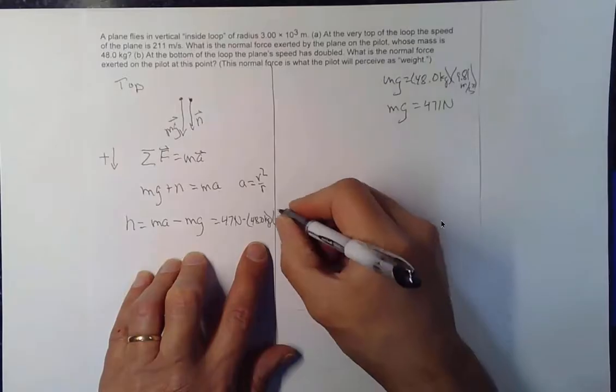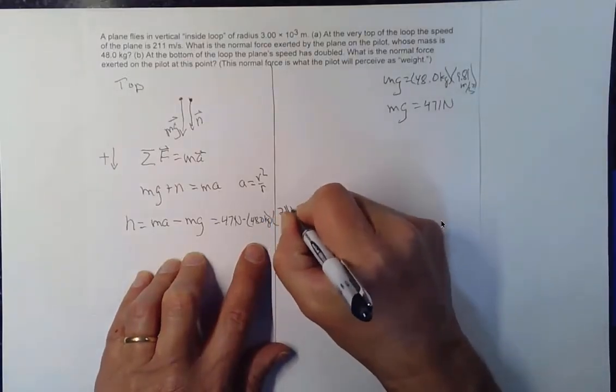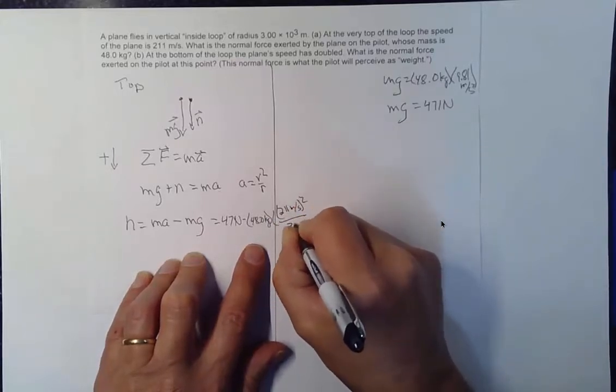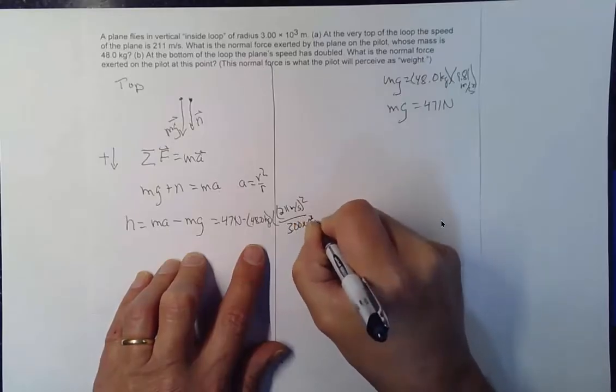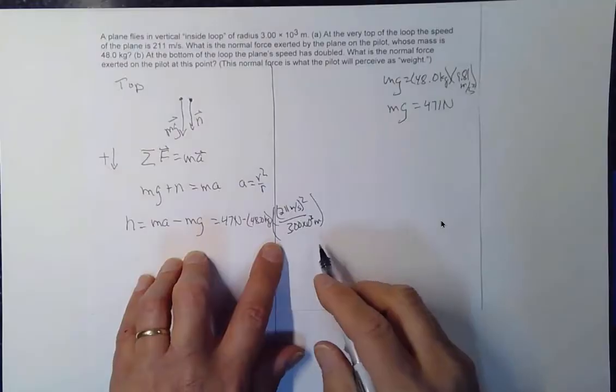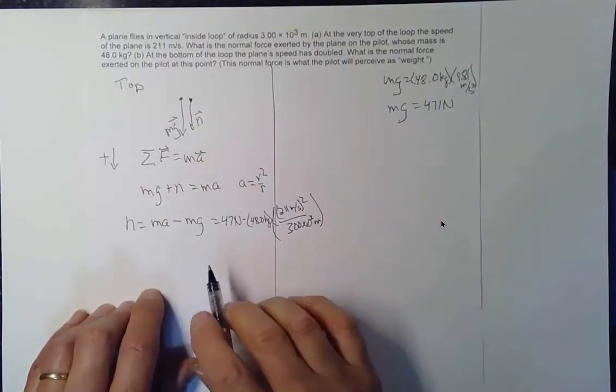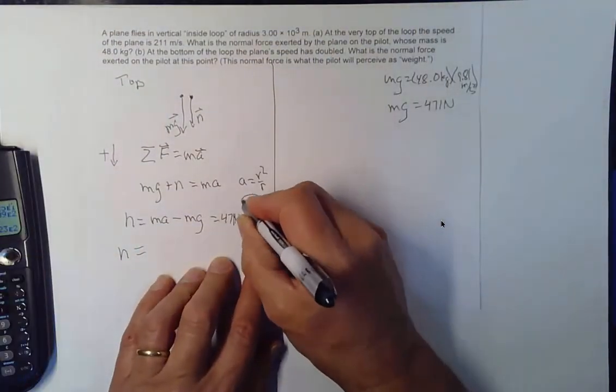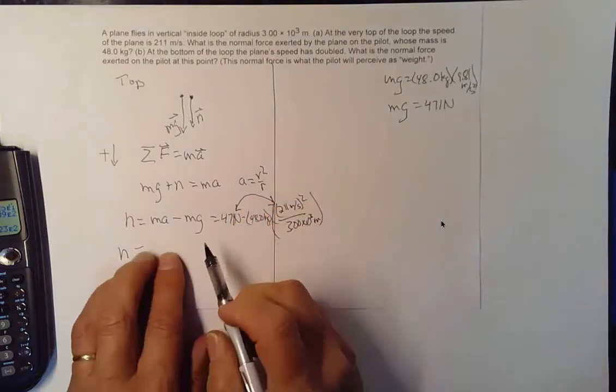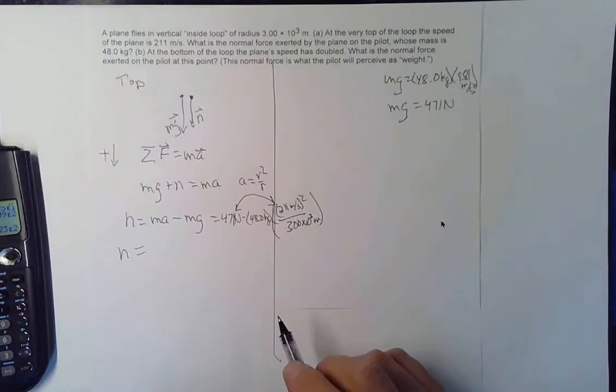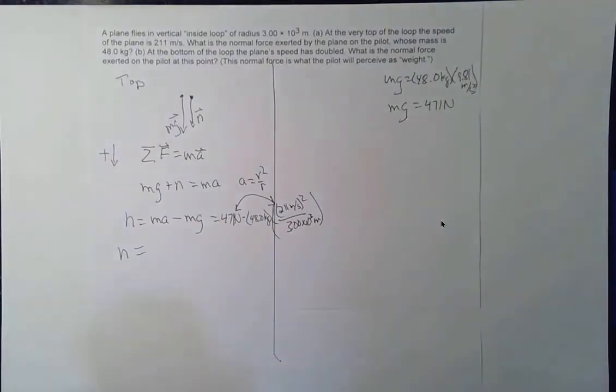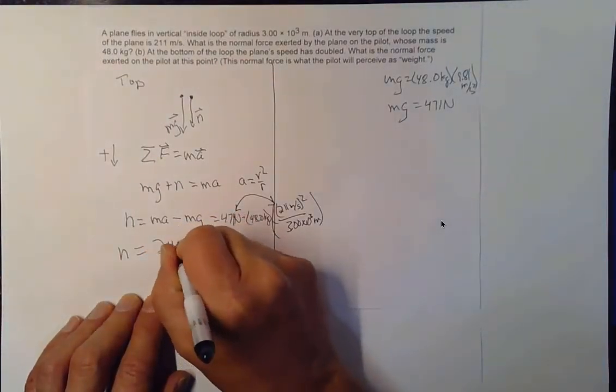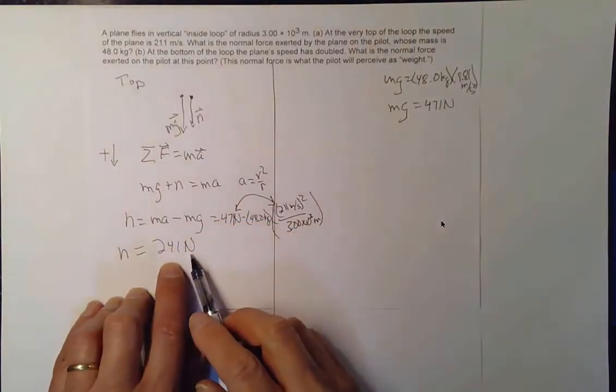Well, at the top they're going 211 meters per second. And I have to square that divided by the 3.00 times 10 to the third meters. So, okay, so I slopped over a little bit room-wise, but this will work out okay. Anyway, plugging in all the numbers, just noticed I have these two things backwards here. I've got, this is MG and this is MA. I was wondering why I got a negative result on this and I shouldn't have. What I get is 241 newtons for the normal force.